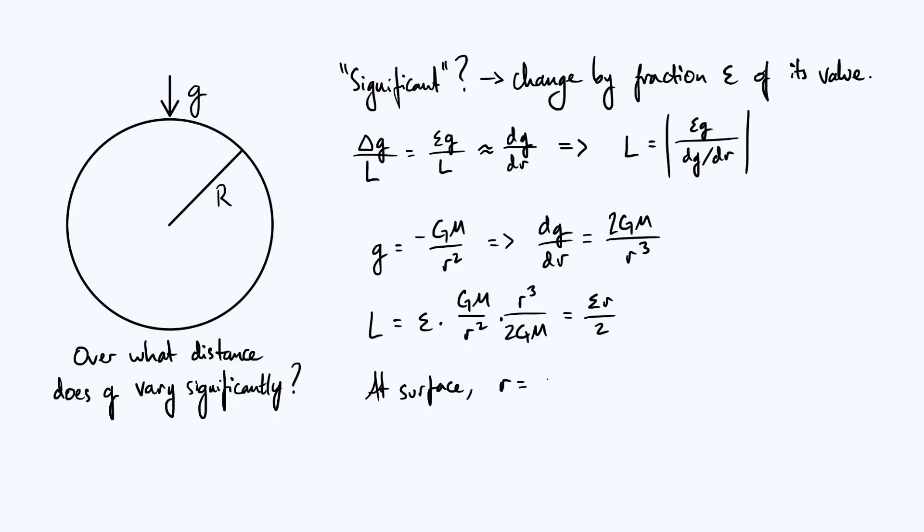At the surface we can set that little r equal to capital R, which is the radius. And in the specific case of earth, let's put some numbers in. Radius of earth is approximately 6400 kilometers, and let's come up with a value of epsilon that seems reasonable.